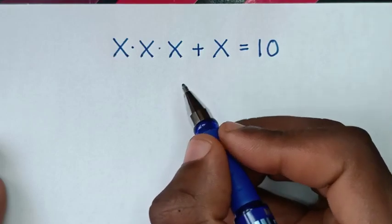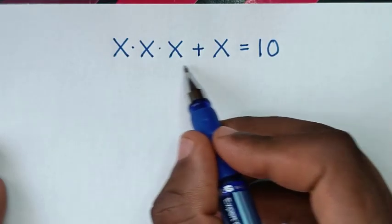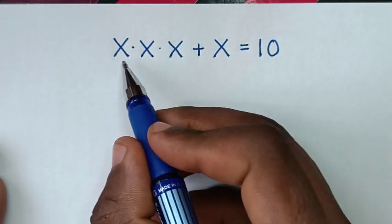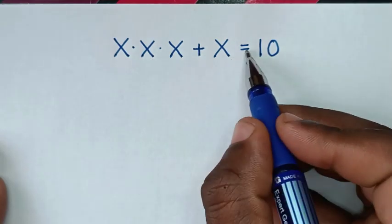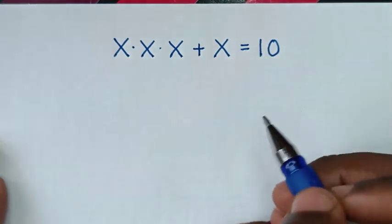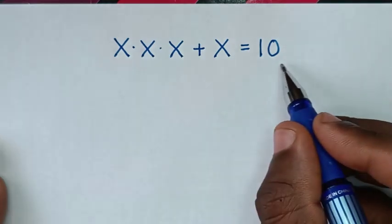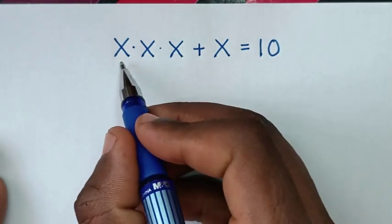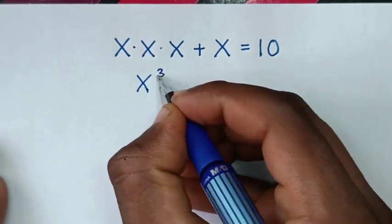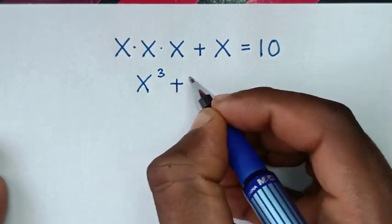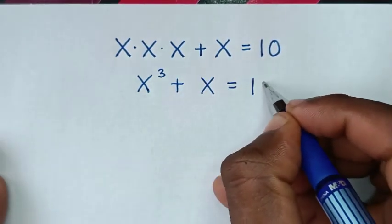Hello, you are welcome to solve this math problem which is x times x times x plus x is equal to 10, to find the values of x from this equation. From here, x times x times x is x power 3, plus x is equal to 10.